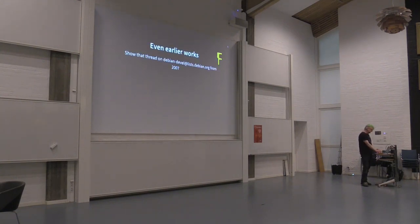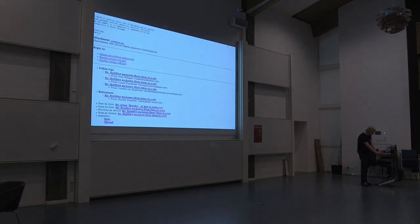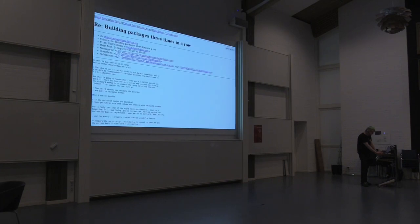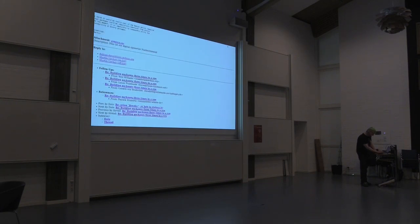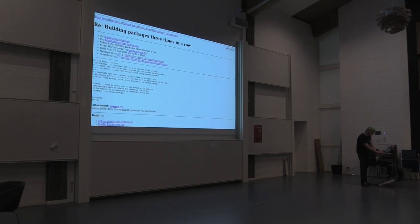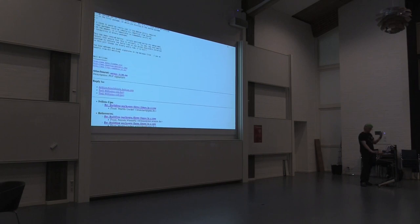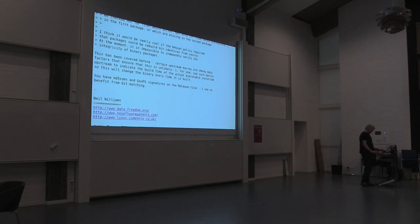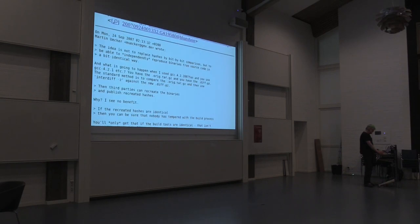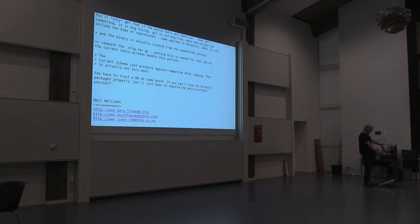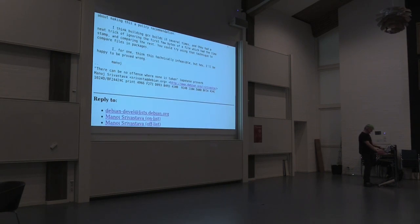That triggered Lunar's bof at DebConf 13, where he brainstormed how to make Debian reproducible. DebConf is the Debian conference. But there were earlier works. There was this manual one, 2007, where somebody asked, building packages three times in a row. And the results were not so good. Neil Williams said, I see no benefit in Debian. This was 2007. Manoj also sees no benefit. But he also says that it's infeasible. It's technically infeasible. But hey, I'm happy to prove him wrong. People thought this was impossible. That was 2007.